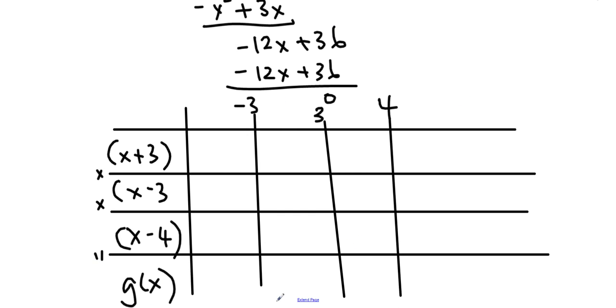Now I have written my zeros here, so I can fill in the intervals. I know that my interval from the end to -3 is negative infinity to -3, then -3 to 3, then 3 to 4, then 4 to infinity. I'm just splitting up the intervals there for my graph.